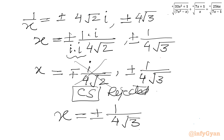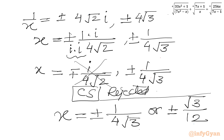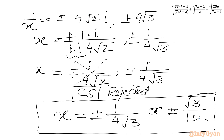So x will be equal to plus or minus 1 over 4 root 3, which can also be written as plus or minus root 3 over 12. This brings the end of the video. Do not forget to like, share and subscribe. Bye-bye till next video. Good luck and take care of yourself. Goodbye.